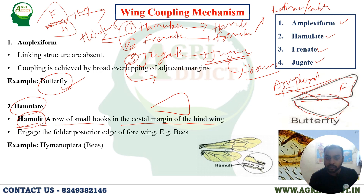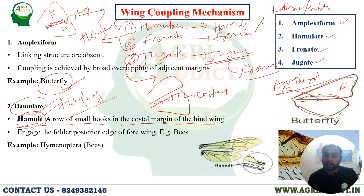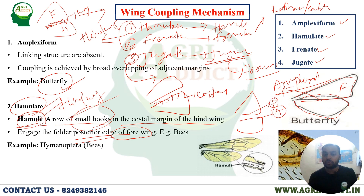The hooks are on the anterior costal margin of the hindwing. The anterior part of the hindwing and the posterior part of the forewing are coupled together. The hamuli originate from the hindwing and engage the fold of the posterior area of the forewing. The example is Hymenoptera. A memory trick: H for hamulate, H for Hymenoptera.